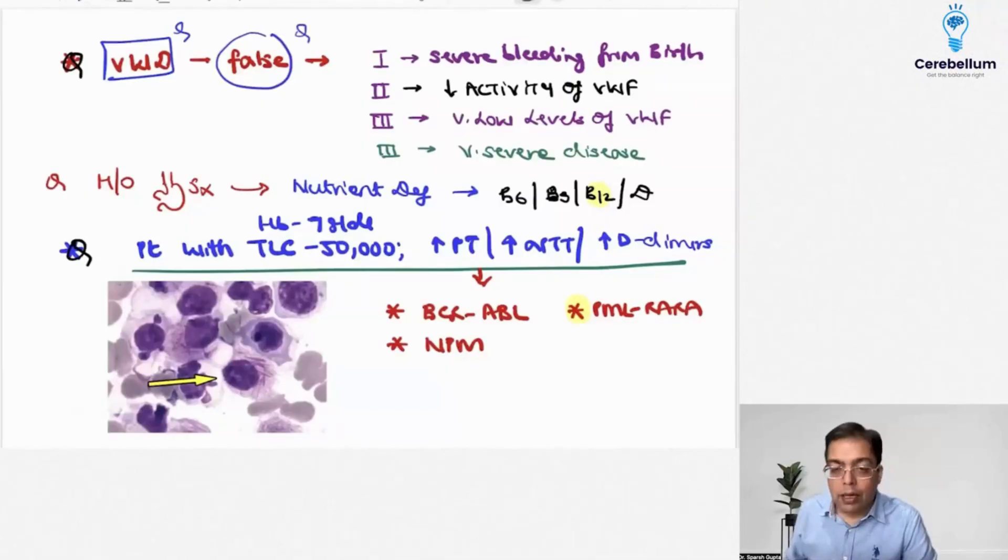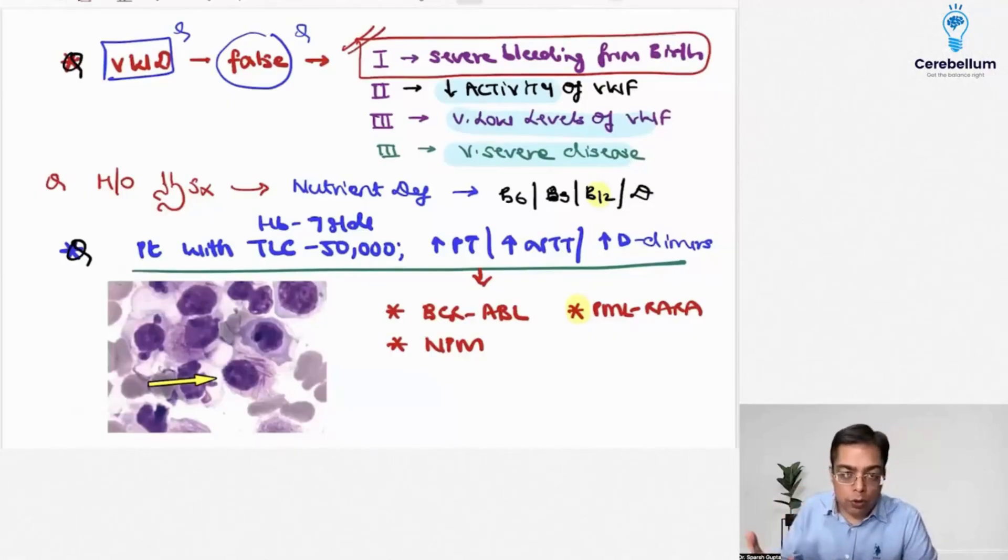So we understand that Type 1, Type 2, Type 3 - Type 3 is the most severe because it has very low levels, absolutely true. Type 2 is the one which is a functional defect. There is no change in the levels as such, but Type 1 is going to be an example of a mild disease. It's the commonest, it is autosomal dominant, it is a mild disease. So that was a false statement that we need to understand.